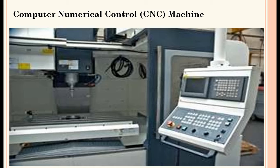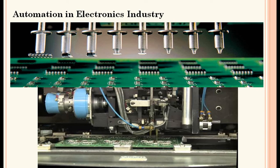Then CNC machines — all mechanical engineers are well aware with computer numerical control machines, which are used for high-quality machined products. Then automation in the electronics industry: in the electronic industry, one PCB is shown on which electronic components are being installed. All the suckers you can see here are nothing but pneumatically controlled valves used to place components onto PCBs.